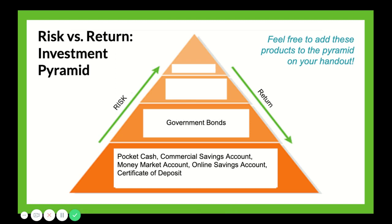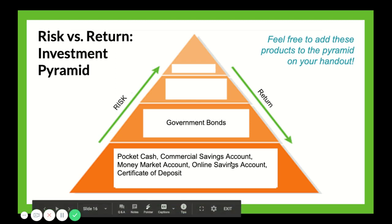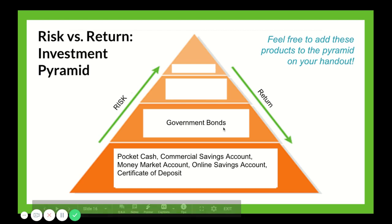At the second level of the pyramid are government bonds. A bond is issued by a U.S. agency and is a loan you give to the government. The government agrees to pay it back at a certain date and pay some interest at a fixed rate along the way. Usually these interest rates are low depending on the time in the economy, but they are backed by the government, so you generally have a fairly low risk of losing your money.